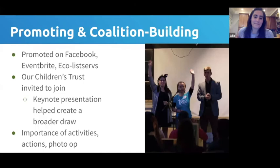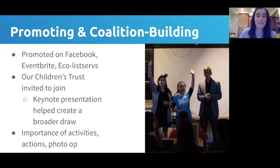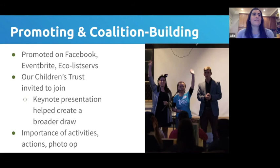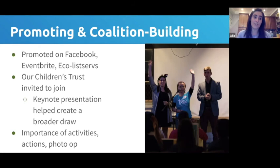We also had an art station where people would write a hope for climate change — you don't need to be an expert to introduce someone to the concept and hand them a marker. For promotion, we used Facebook, Eventbrite, and listservs. Individual invitations really matter: if you can give people a personal email or text format to send to five or ten friends, that personal invitation — where they have someone to ask questions to — is really helpful for both attendees and volunteers.